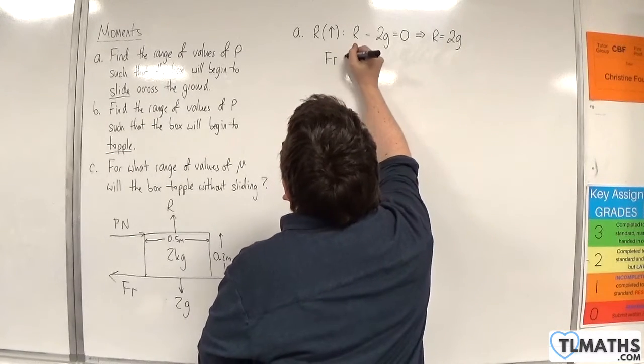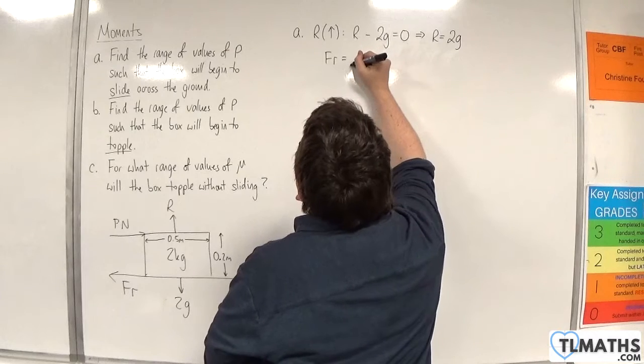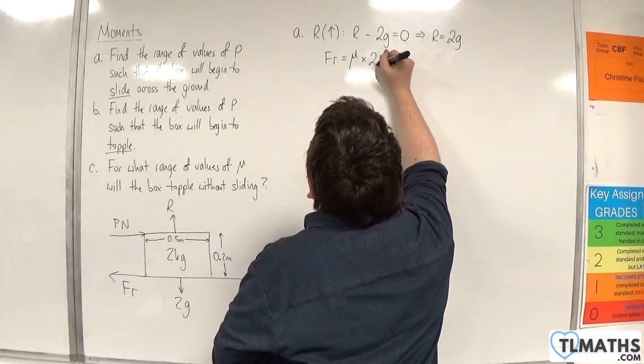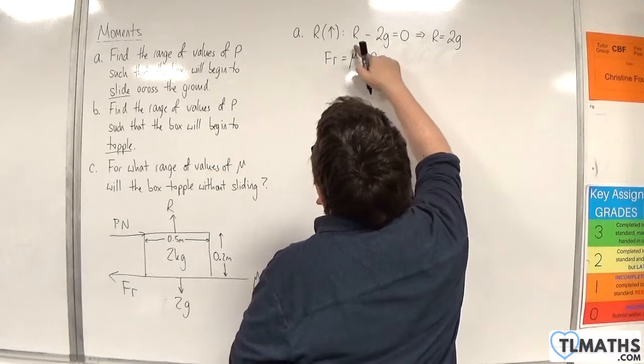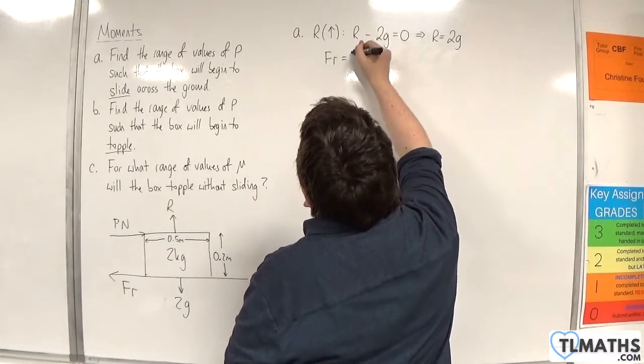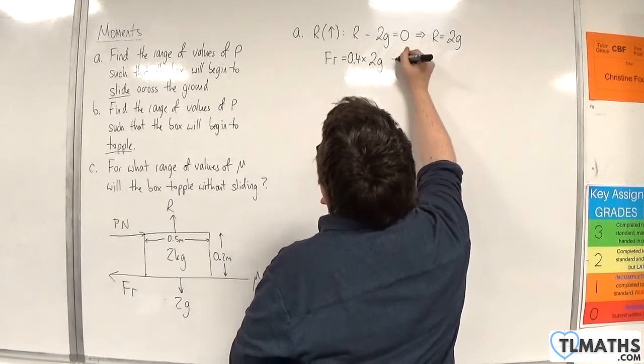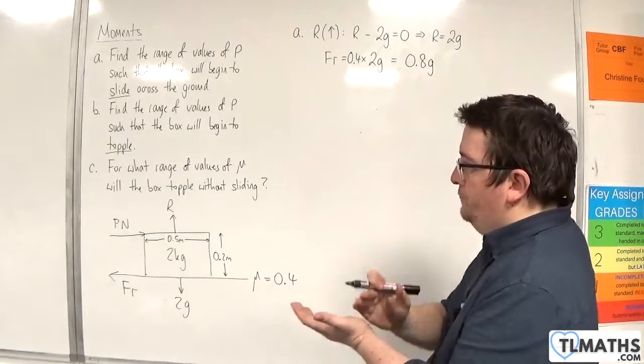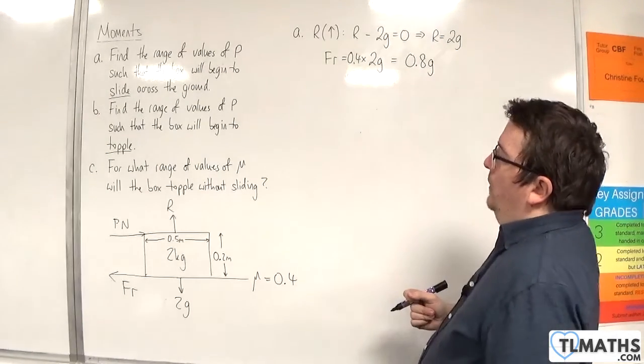We know that the friction would have to be equal to mu times r, so that's mu times 2g. Now, mu is 0.4, so the friction has got to be 0.8 times g.